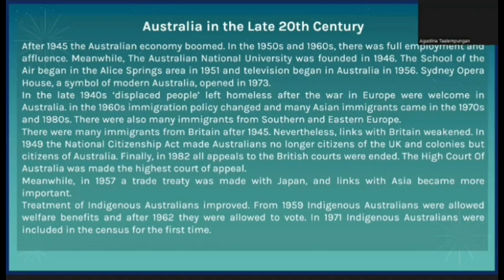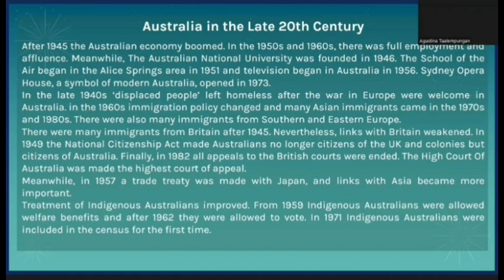In the late 1940s, displaced people left homeless after the war in Europe were welcomed in Australia. In the 1960s, immigration policy changed and many Asian immigrants came in the 1970s and 1980s. There were also many immigrants from Southern and Eastern Europe, and many from Britain after 1945. Nevertheless, links with Britain weakened. In 1949, the Nationality Act made Australians no longer citizens of the UK and colonies, but citizens of Australia. In 1982, all appeals to British courts were ended.